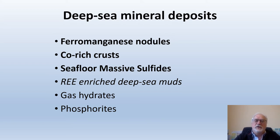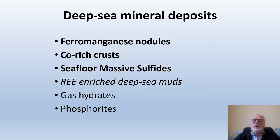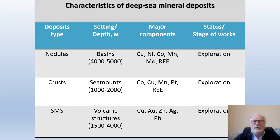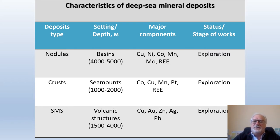Three other types of deep sea minerals shown here are situated outside of the area: gas hydrates and phosphorites, or are very poorly studied at the moment — this is regarding the rare earth element-enriched muds. Each type of deep sea mineral is characterized by specific features in their position at the sea floor, water depths, and geological setting. You can see these characteristics on this slide.